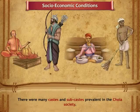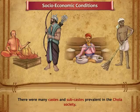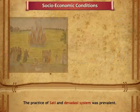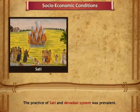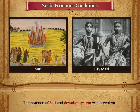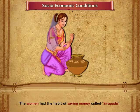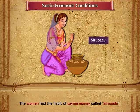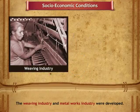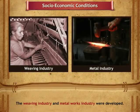There were many castes and sub-castes prevalent in the Chola society. The practice of Sati and the Devadasi system were prevalent. Women had the habit of saving money called Sirupadu. The weaving industry and metal works industry were developed.